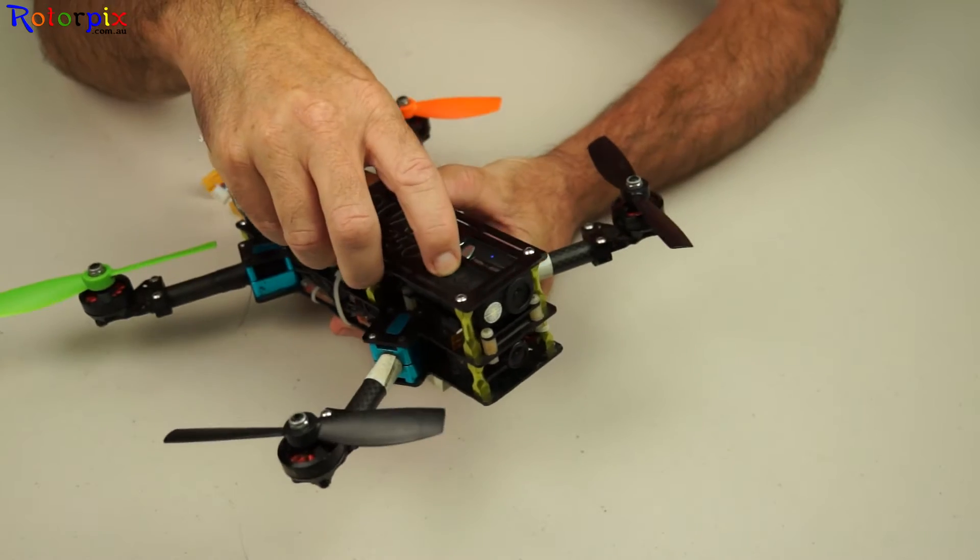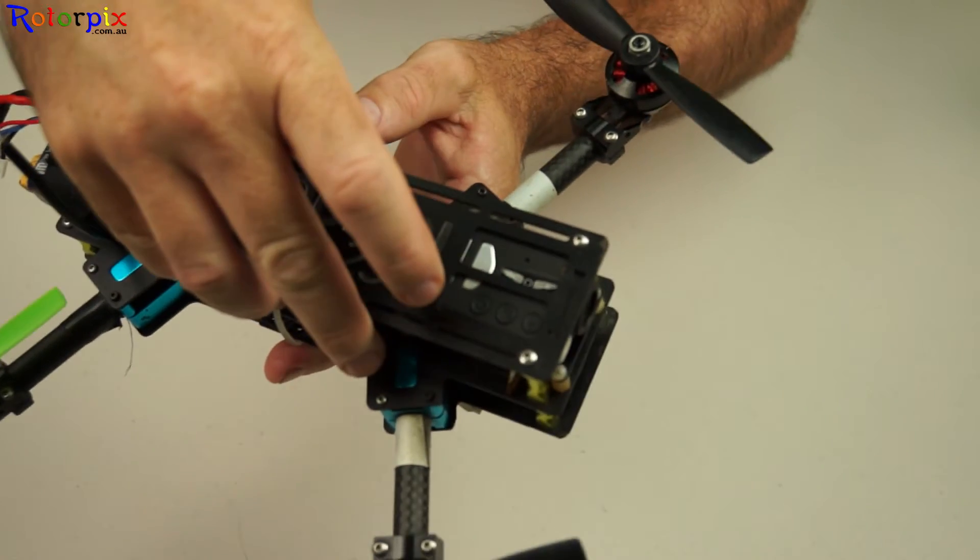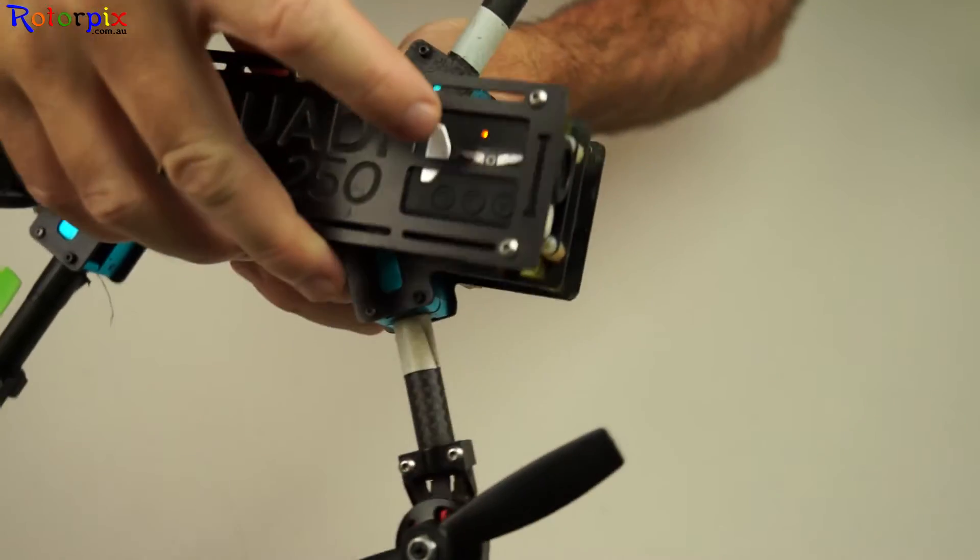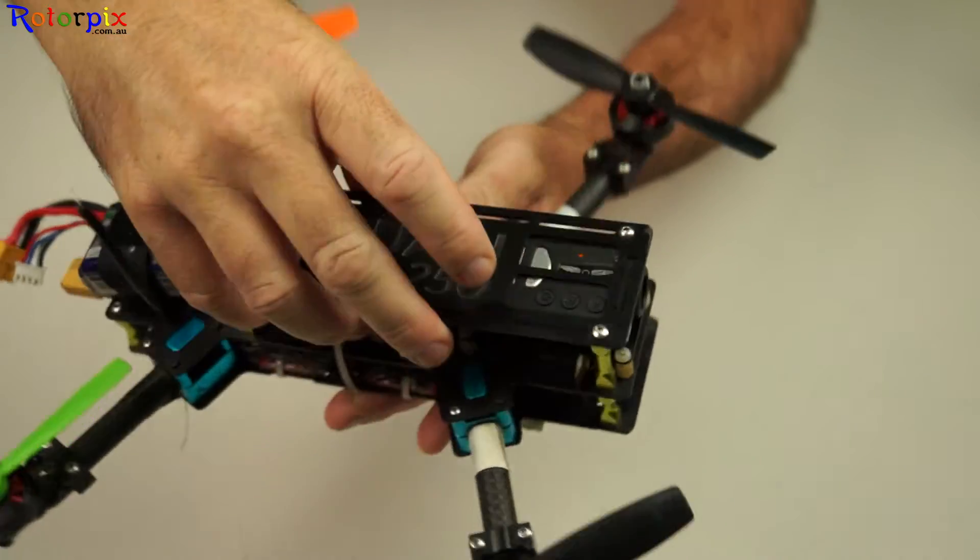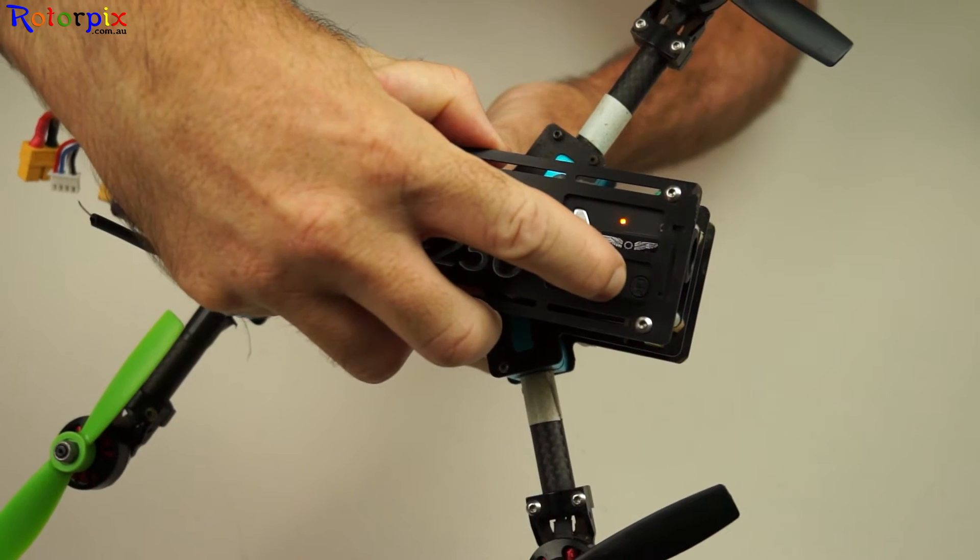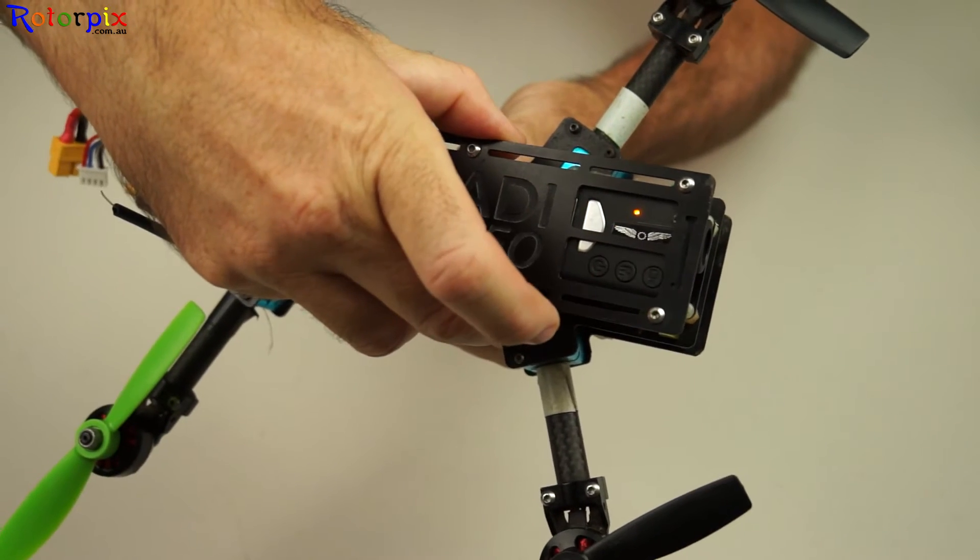So basically, when you turn the Mobius on like that, you'll get a yellow light there. Then if you hold the mode button down just for a couple of seconds, it'll flash.